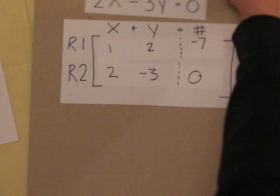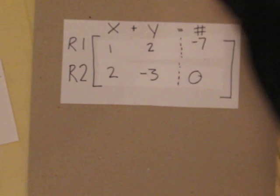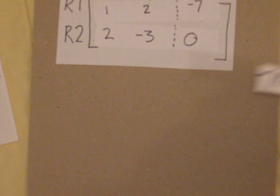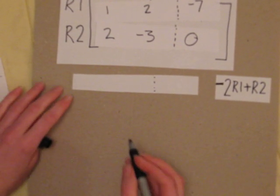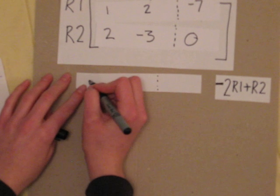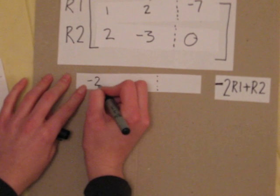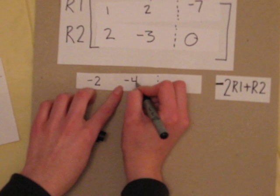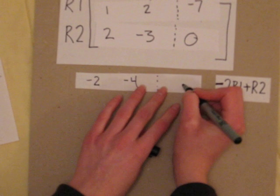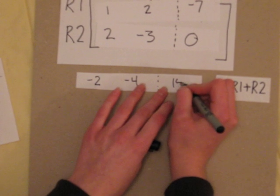Well, if we use negative 2 times the first row and add that to the second row, that should do the job. So let's take negative 2 times the first row. Now, 1 times negative 2 is negative 2. 2 times negative 2 is negative 4. And negative 7 times negative 2 is positive 14.